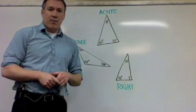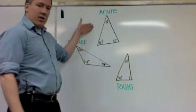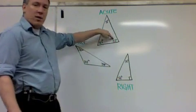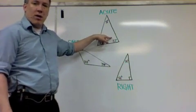In order to classify them, you need to look at the largest angle. So if I look here at this triangle, I have a 38 degree, a 60 degree, and an 82 degree angle. 82 is the largest, so I look there.